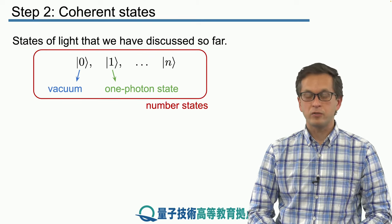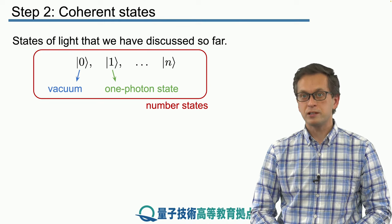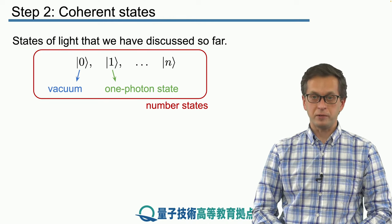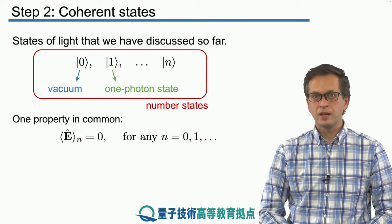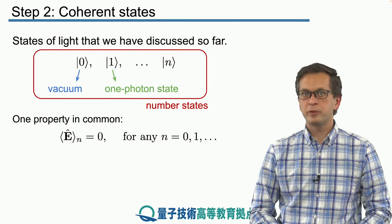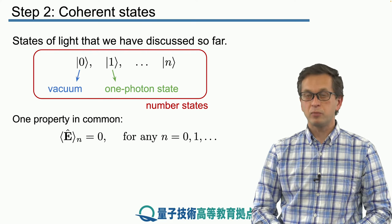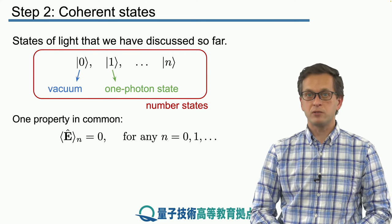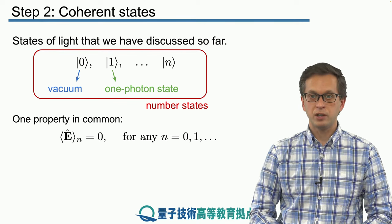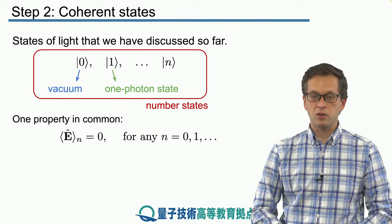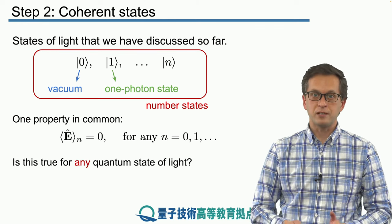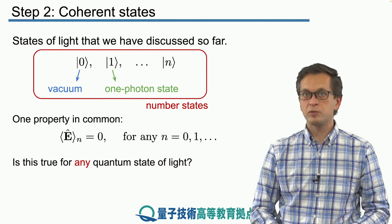They are the eigenstates of the single mode quantum harmonic oscillator and also of the single mode number operator. And they have one common property. They've got the peculiar property that their average of the electric field when prepared in one of these states is always 0. Regardless of in which number state you prepare your quantum light to be in, the average of the E field is always 0. So we can ask the question, is this always true for any quantum state of light?